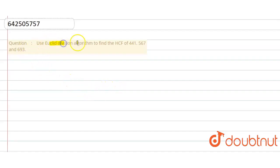So hello, in this question use the Euclidean division algorithm to find the HCF of 693, 567 and 441. So we need to use Euclidean algorithm.